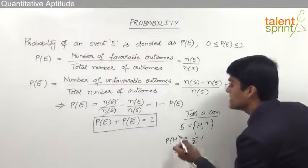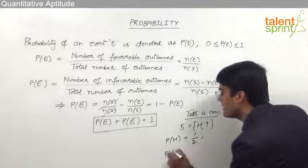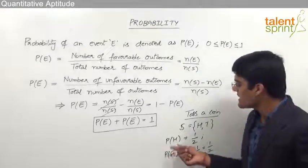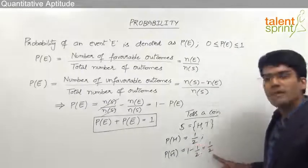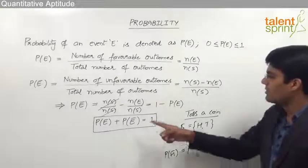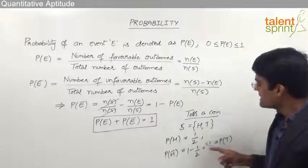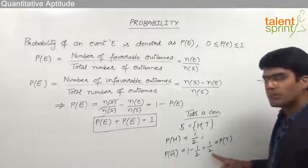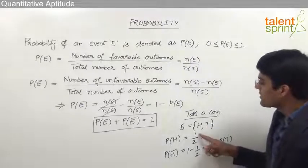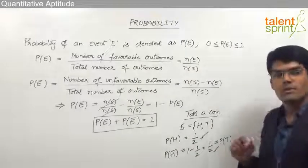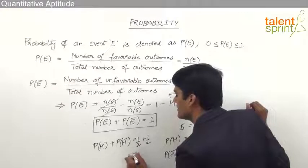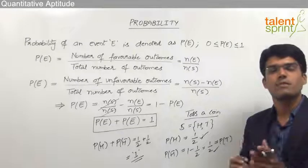The probability that the output is not a head is the probability of failure, which is 1 minus the probability of success: 1 minus 1/2 equals 1/2. So the probability that the output is head is 1/2 and the probability that the output is not a head is also 1/2. The output not being a head means it has to be a tail, so that is the probability of a tail. Probability of success 1/2 plus probability of failure 1/2 equals 1, confirming that probability of success plus probability of failure always equals 1.